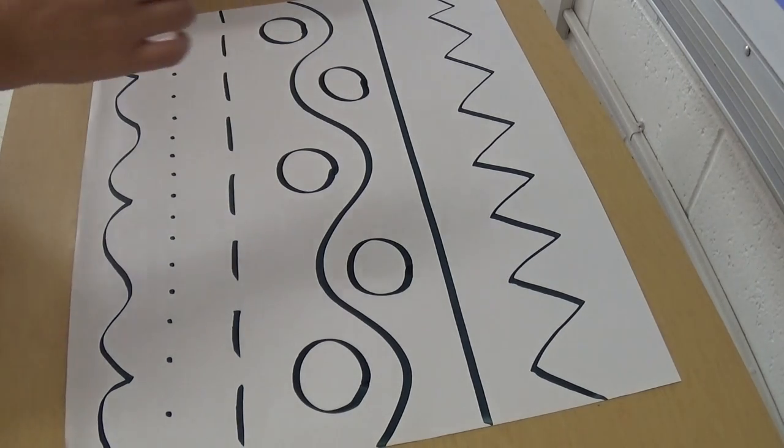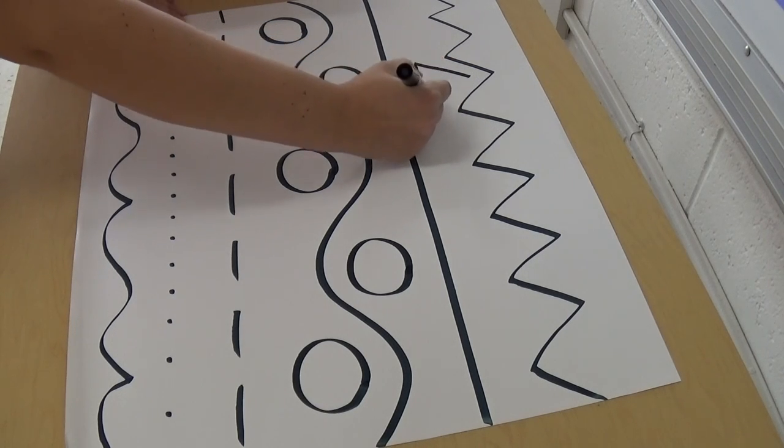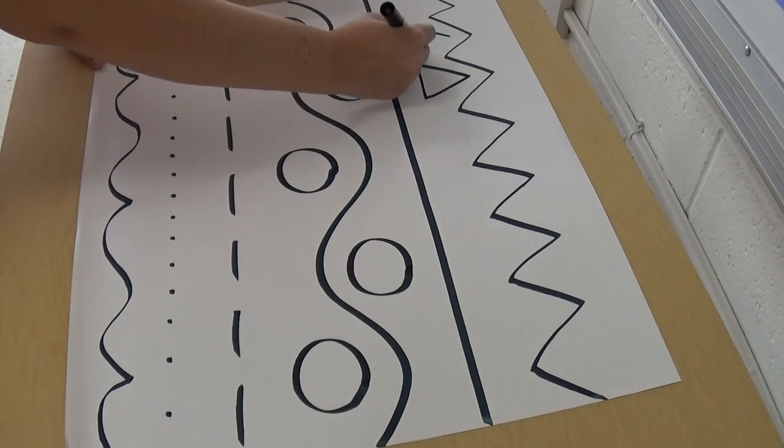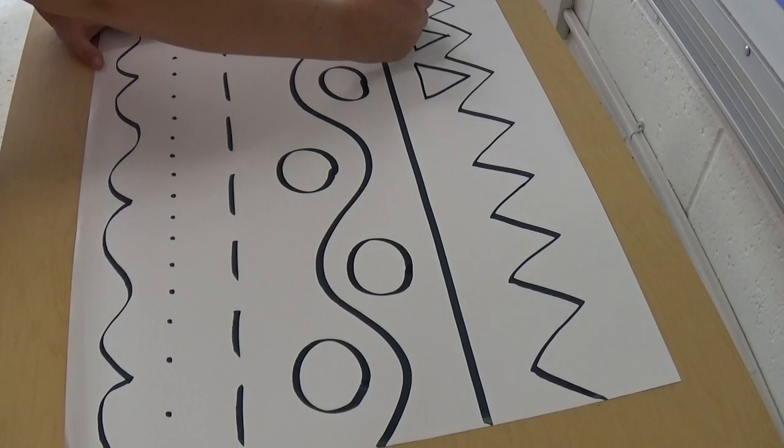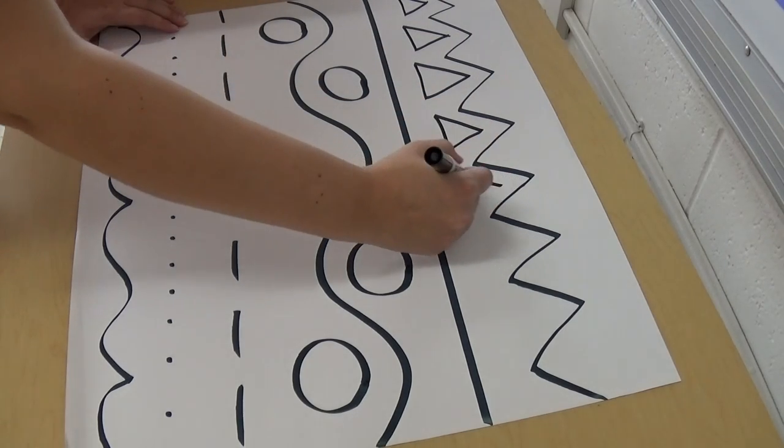And then I think I'm going to add some triangles up here. And I'm using a black marker to make all these shapes.